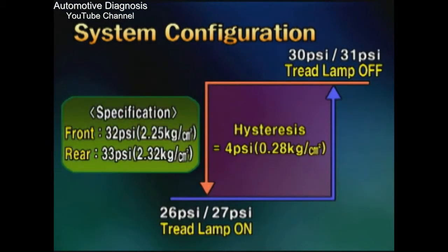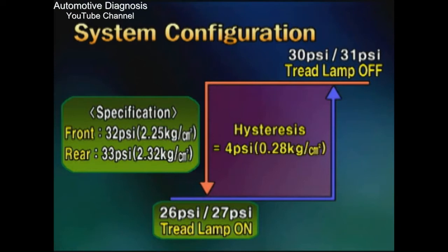The specific pressures of the tires are 32 PSI for the front tire and 33 PSI for the rear tire. When pressure of the front tire is 26 PSI or that of the rear tire is 27 PSI, the low pressure warning lamp turns on. When pressure of the front tire is over 30 PSI and that of the rear tire is over 31 PSI, the warning lamp turns off.